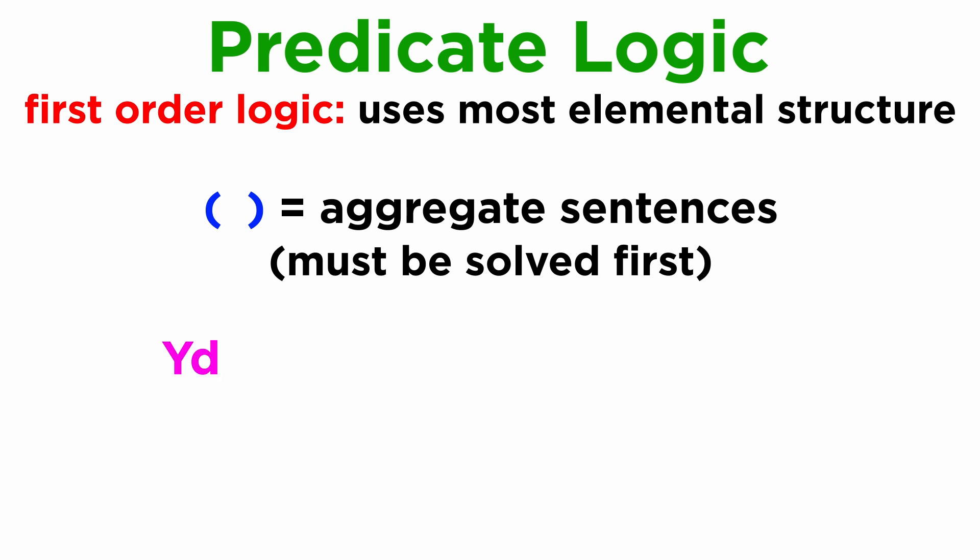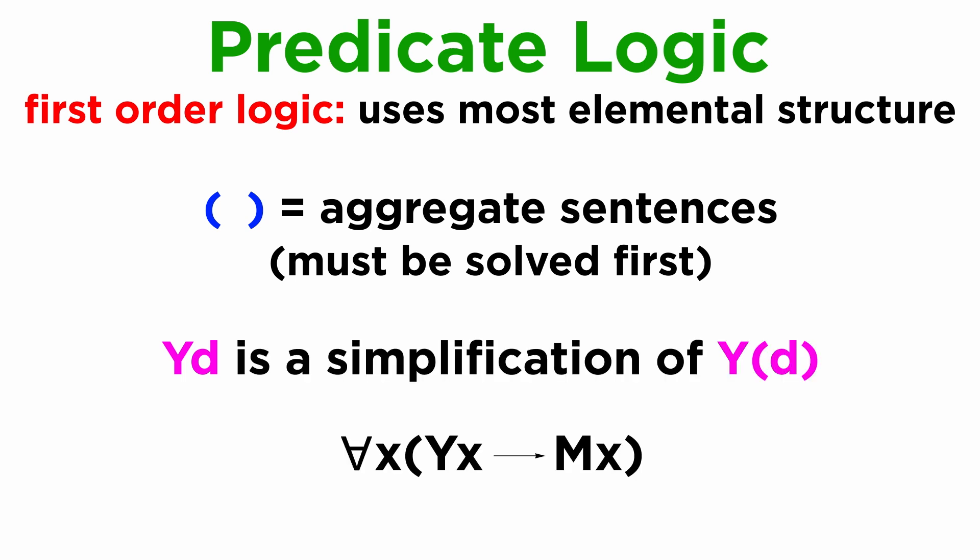First, when we represent myself as the capital Y for YouTuber and a minor D for Dave, Y(D), we are actually simplifying the presupposed parentheses. Indeed, our common example for all x, Y(x), then M(x), could be written this way.